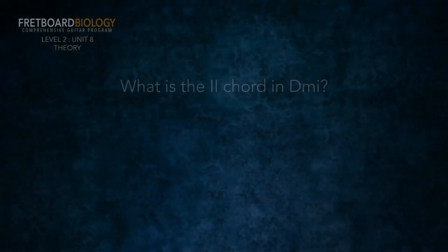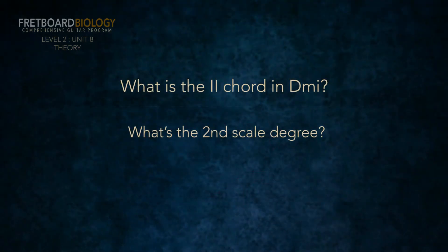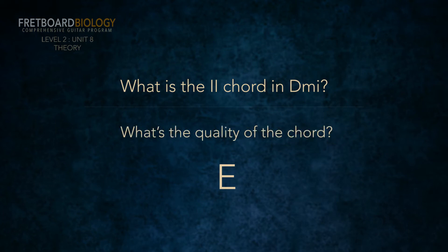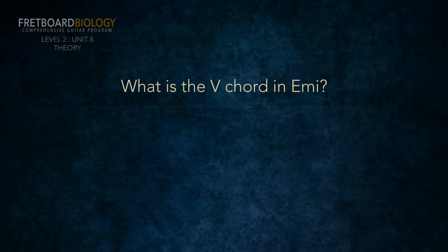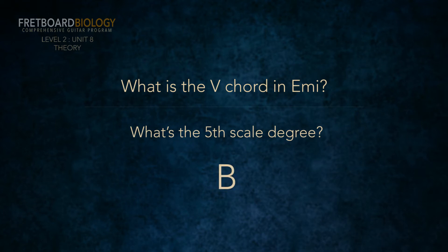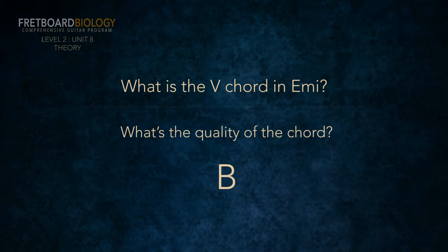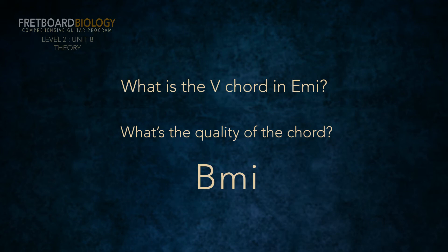Let's try a few examples. What's the two chord in D minor? First, let's find the second scale degree in D minor. The second scale degree of D minor is E — we know that because we know our key signatures. What quality chord is built on two in all natural minor scales? It's diminished. If the second scale degree is E and the quality is diminished, the two chord in D minor is E diminished. What's the five chord in E minor? The fifth scale degree of E minor is B — we know our key signatures. The quality built on five in the natural minor scale is minor. So the five chord in E minor is B minor.